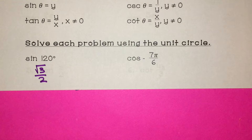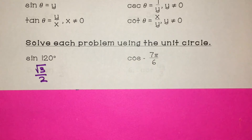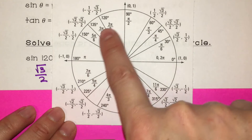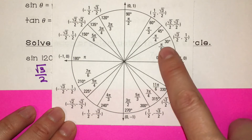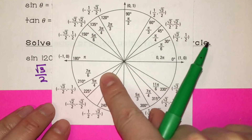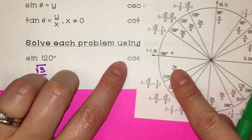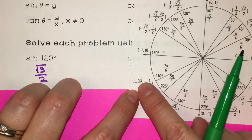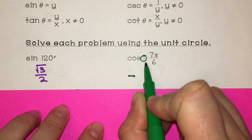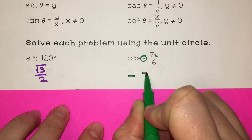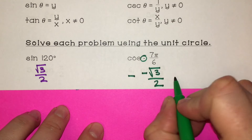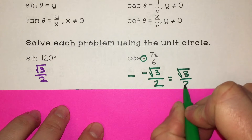Now we have cosine of negative 7π over 6. Find 7π over 6 — we have our radians and degrees. It's cosine, so that's the x value, which is negative square root of 3 over 2. But we also have this negative from our problem, so negative times negative square root of 3 over 2. A negative times a negative is a positive, so they cancel out and the answer is just square root of 3 over 2.